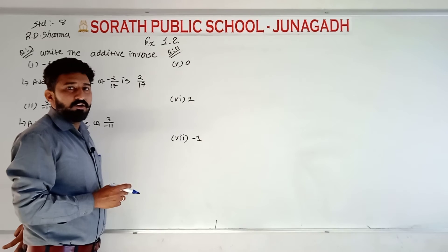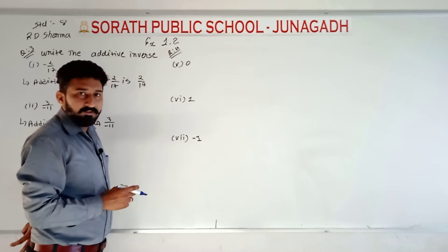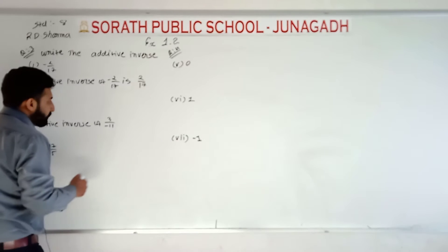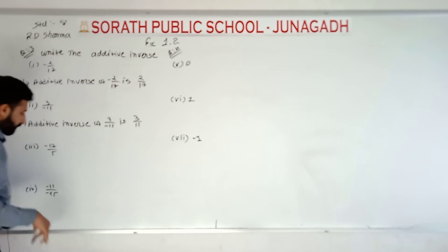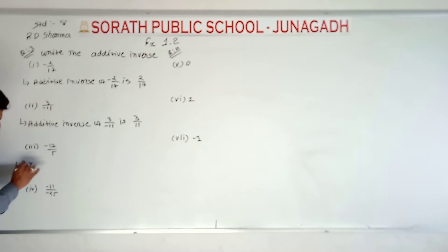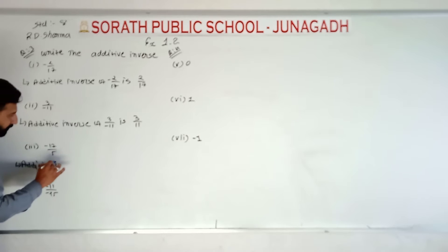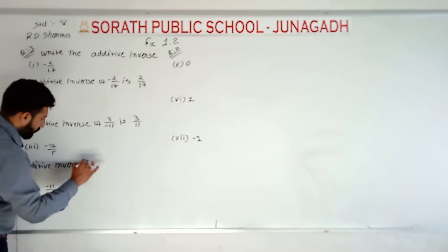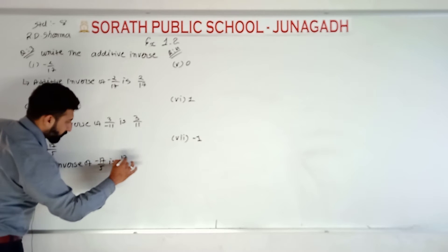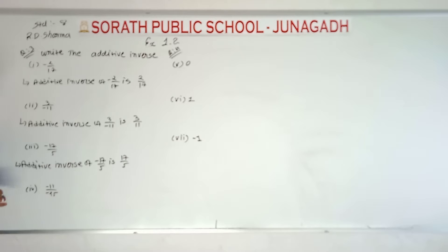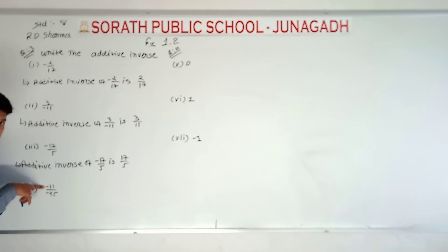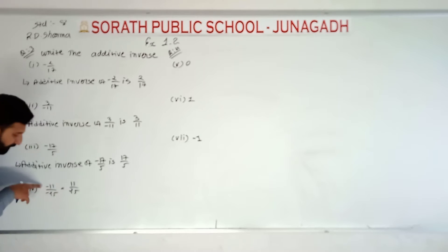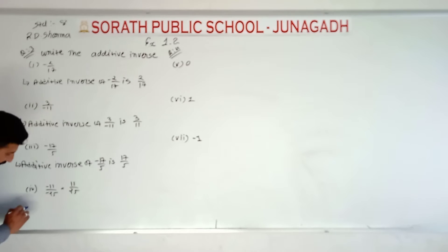Whenever we add a number and its additive inverse, we always get zero. For example, 17 upon 5: both numerator and denominator are negative, so minus minus becomes plus — it becomes 11 upon 25. Because both are negative, minus minus cancels, so 11 upon 25 is the additive inverse.